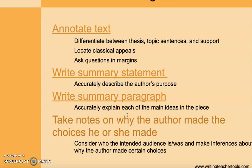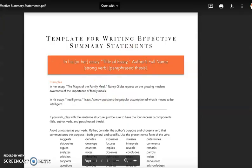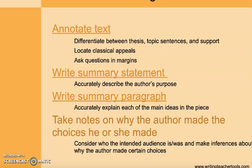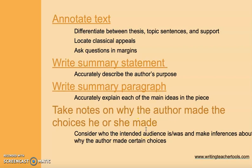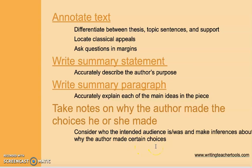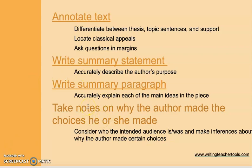The last thing is I want you to be annotating your text — marking it up. Try to identify where is the thesis, where are the topic sentence ideas or main supporting ideas, where's evidence for each piece of support, look for those classical appeals, ask questions in the margin, perhaps write a summary statement — I've linked to a document showing how to write one — write a summary paragraph, and take notes as you're reading. Why do you think the writer made these different choices? Consider who the intended audience is and make inferences about why those choices were made.